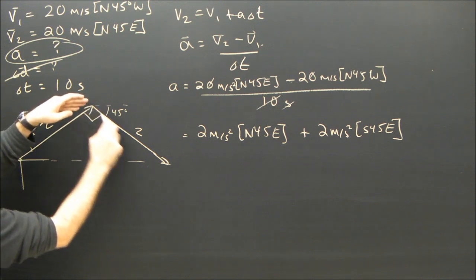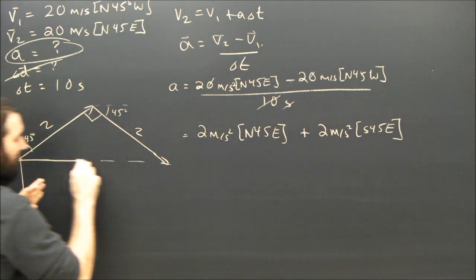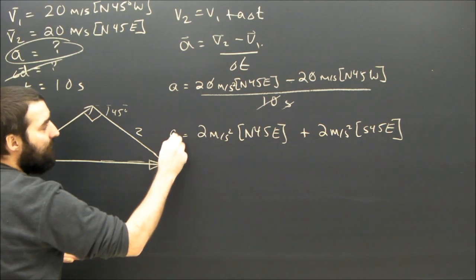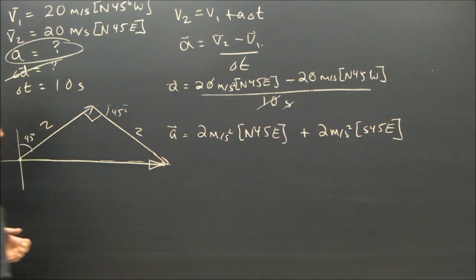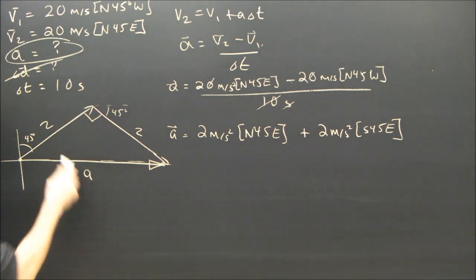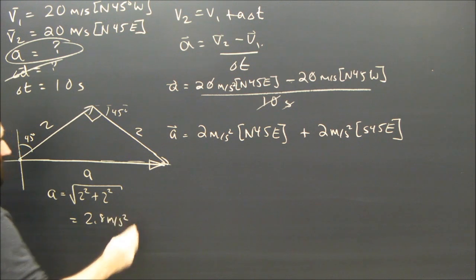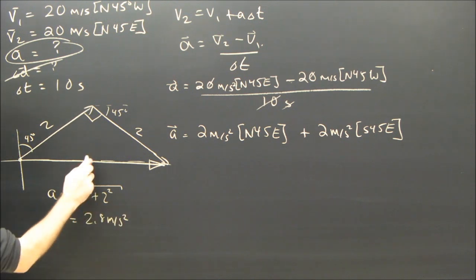2 northeast plus 2 southeast gives me an answer, which we used to call the resultant. But in this case it's A because that's what we're trying to find. And the acceleration is just this side. So this is a nice, simple right angle triangle. So the acceleration is going to be equal to the square root of 2 squared plus 2 squared, which is root 8, which is 2.8 meters per second squared.